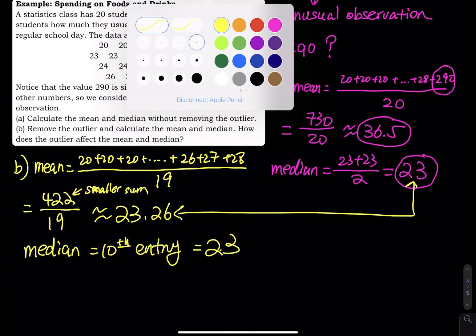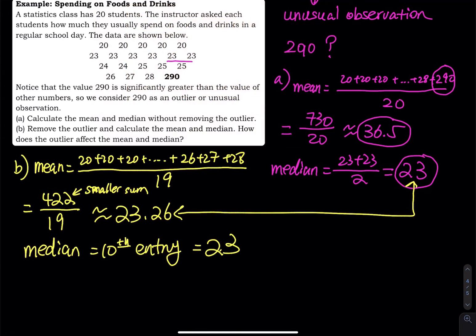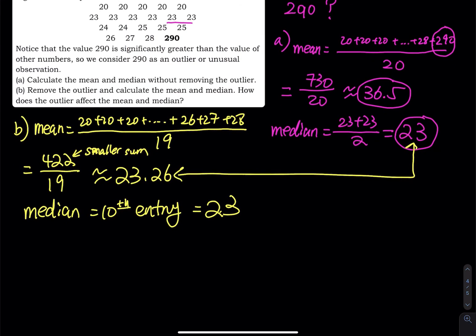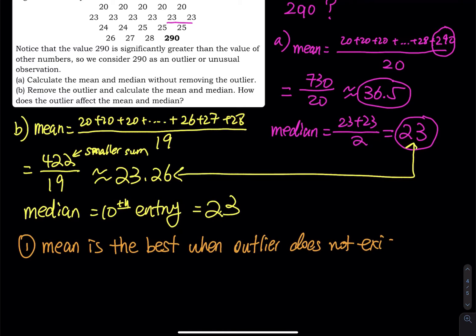So now here is the conclusion. When outlier exists, so let's choose a different color to draw conclusion. Mean is the best central tendency, mean is the best when outlier doesn't exist. We always pick the mean when we consider central tendency, we always pick the mean when outlier doesn't exist.